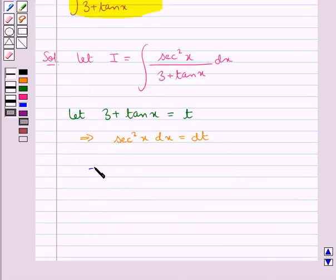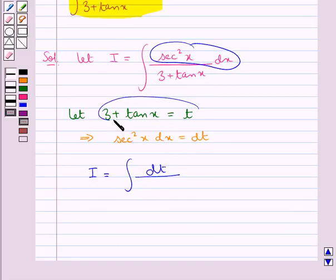So now we substitute: I equals the integral of dt over t, since we replaced sec²x dx with dt and (3 + tan x) with t.